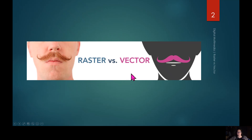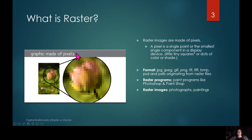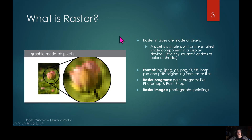What is a raster file? A raster file is an image made up of pixels, and a pixel is a single point or the smallest single component in a display device. So when you're talking about DPI and PPI, that's what you're talking about. Raster images can be JPEGs, GIFs, PNGs, TIFFs, PSDs, as well as PDF files.